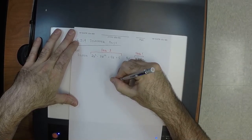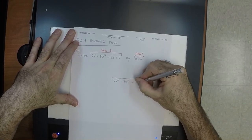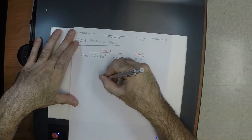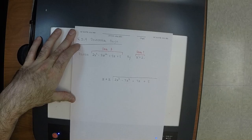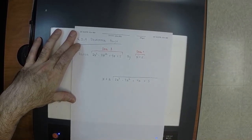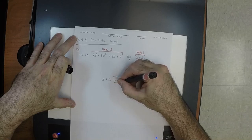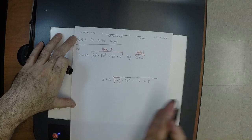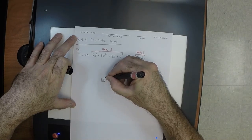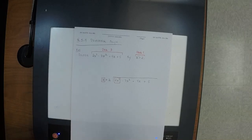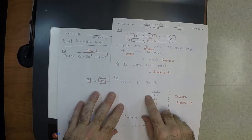Just like in grade school there is a house. So 2x³ − 3x² + 4x + 5 is inside the house, and x + 2 is outside the house. x + 2 wants to come in. The way you do this is you consider the leading term inside the house — just like in grade school you considered the digit furthest to the left — and we consider the leading term outside as well.